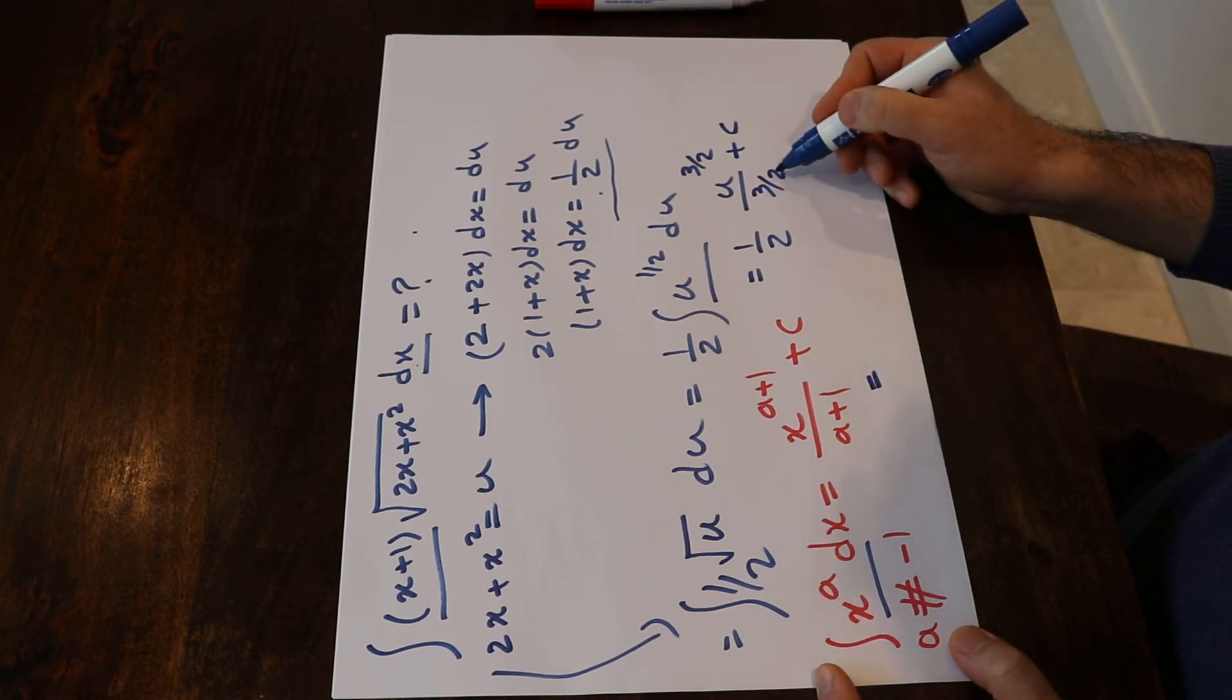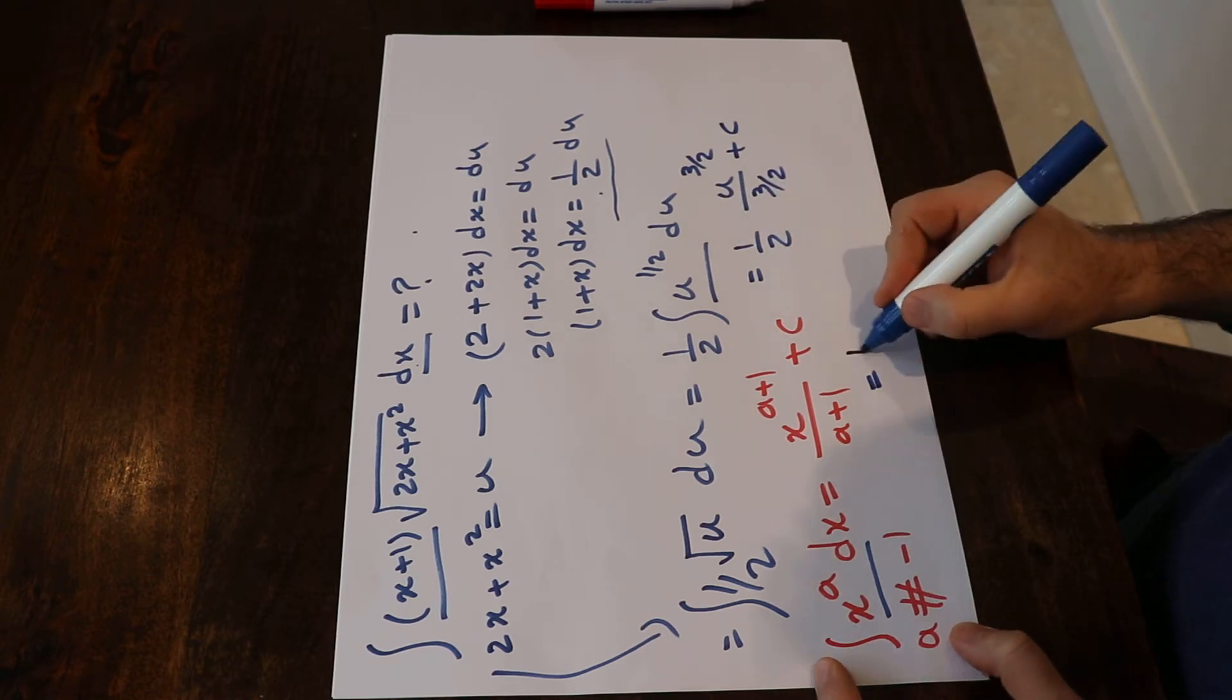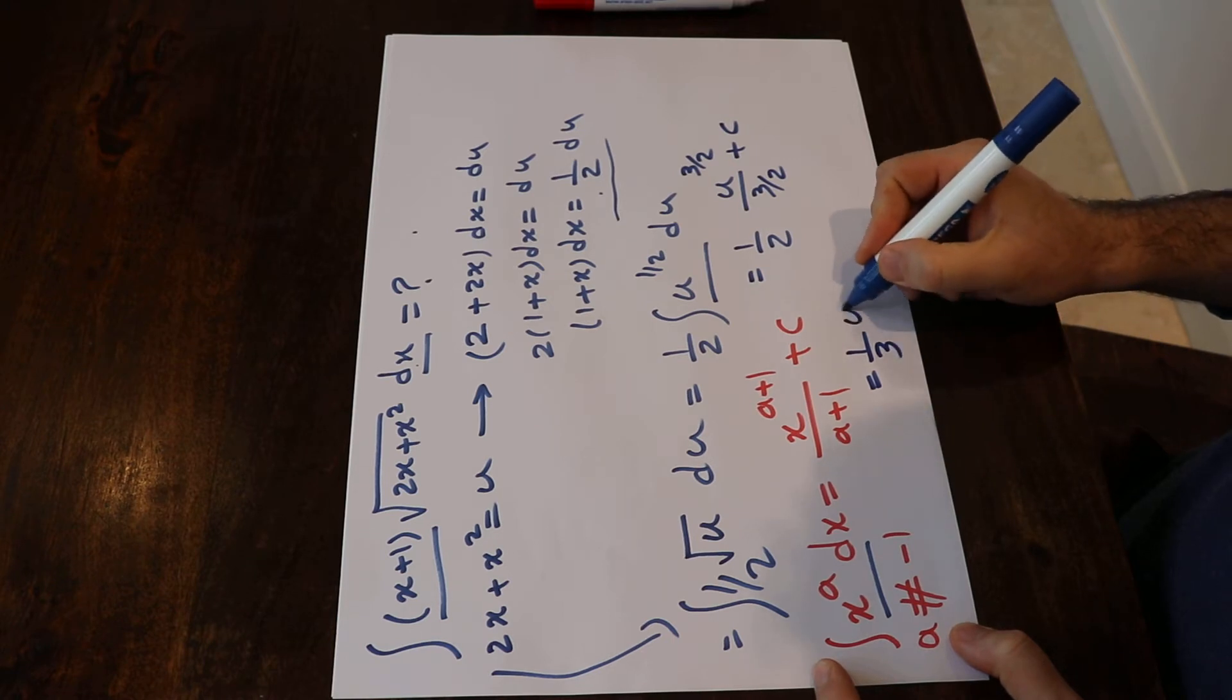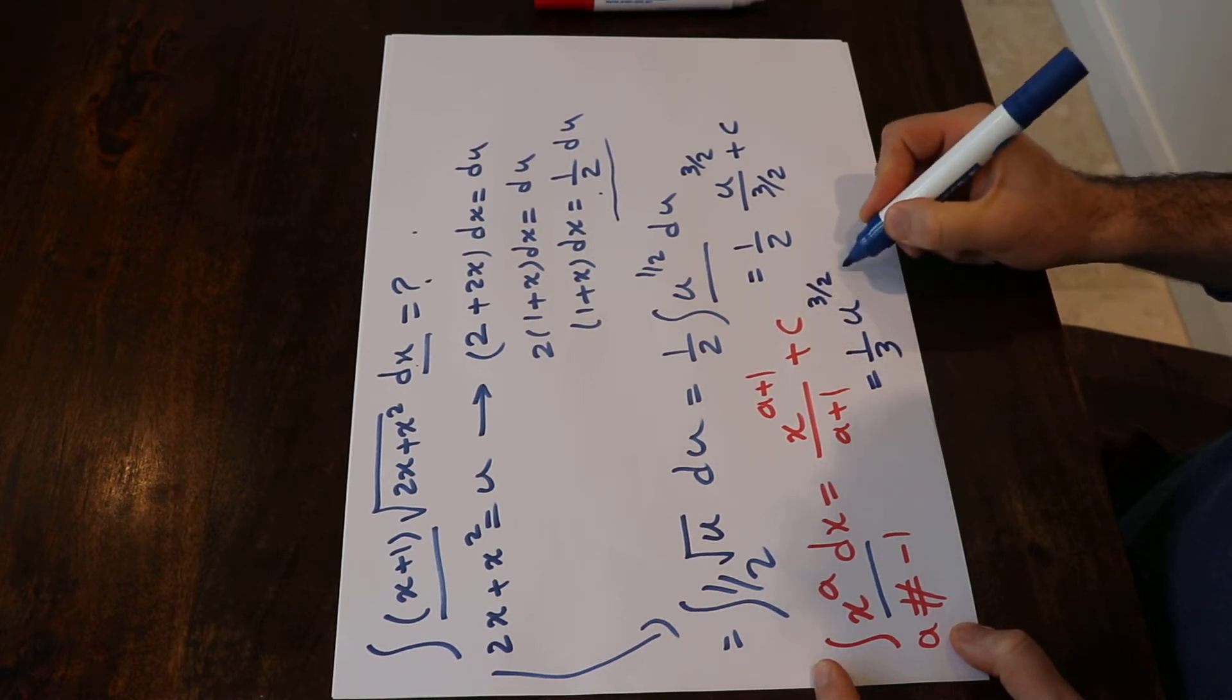That will be equal to (2/3 times ½), that will be 1/3, times u^(3/2) plus c.